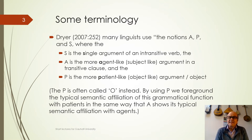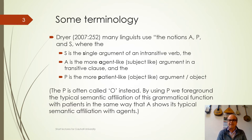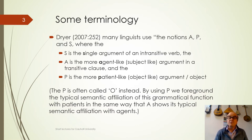To talk about these arguments, many linguists use the notions A, P and S. You'll need to remember these. S is the single argument of an intransitive verb. A is the more agent-like or subject-like argument in the transitive clause. And P is the more patient-like or object-like argument. Some people use O instead of P, but we're going to use P in this discussion.